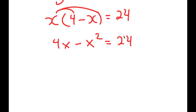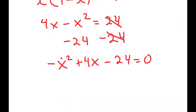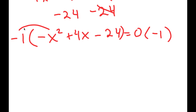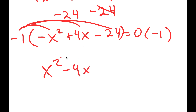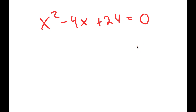Now I'm going to subtract 24 on both sides, so I get negative x squared plus 4x minus 24 is equal to 0. I don't want my coefficient for my highest degree term to be negative, so I'm going to multiply both sides by negative 1. That gives me x squared minus 4x plus 24 is equal to 0.